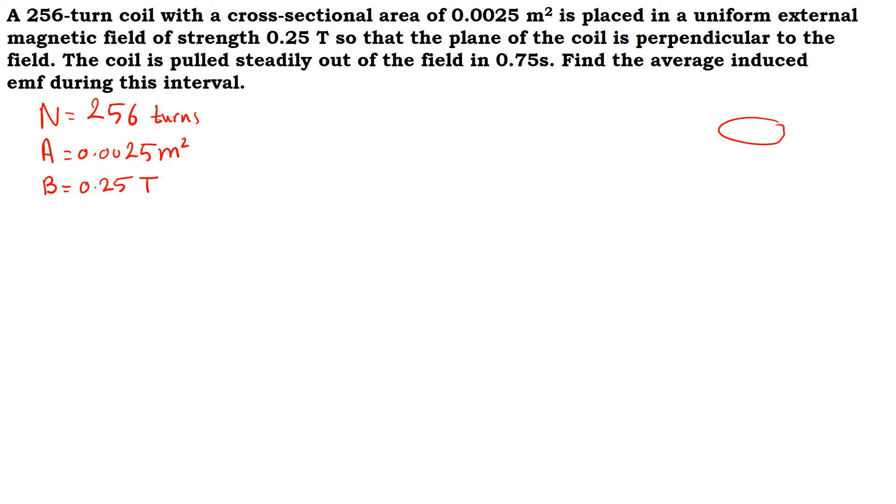The plane of the coil is perpendicular to the field. So if this is the plane of the coil, the field is perpendicular to the coil. If we draw the normal line to the coil, it's also perpendicular to the coil. Then the field and the normal line are parallel, so the angle between them is 0 degrees.